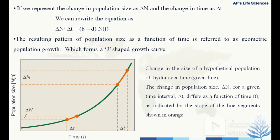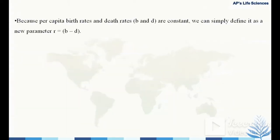In this figure, the change in size of a hypothetical hydra population over time is represented by the green line. The change in population size ΔN for a given time interval Δt differs as a function of time t, as indicated by the slopes of the orange line segments, because per capita birth rate and death rate (small b and small d) are constant.